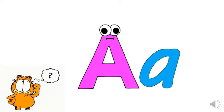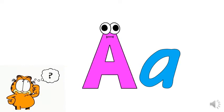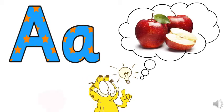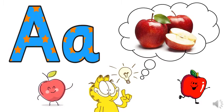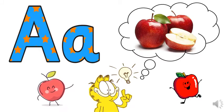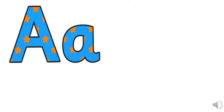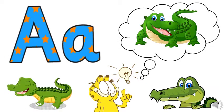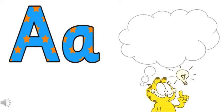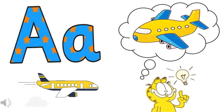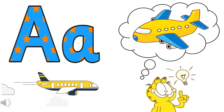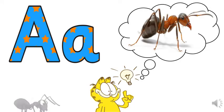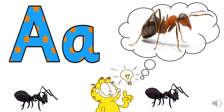Okay kids, do you know what are the things that start with letter A? A is for apple. Do you eat apple? That's great! I love apple! A is for alligator. Have you seen an alligator before? Me too! I've seen an alligator before. A is for airplane. Have you seen an airplane in the sky flying so fast? Me too! That's awesome! A is for ant. There are red and black ants. Can you check your house if you can find black or red ants?